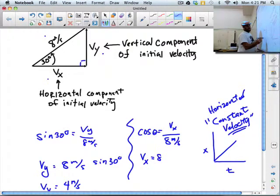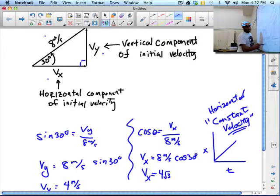So my X component is going to be eight meter per second times cosine of 30 degrees. And I think that's going to be radical three over two. So V in the X direction is going to be four radical three meters per second.